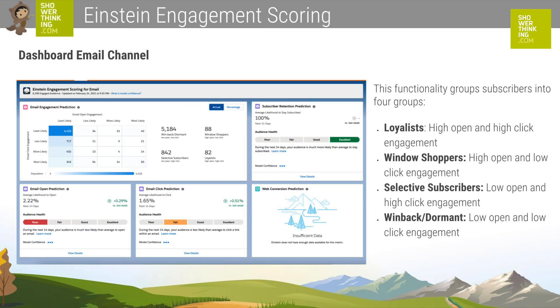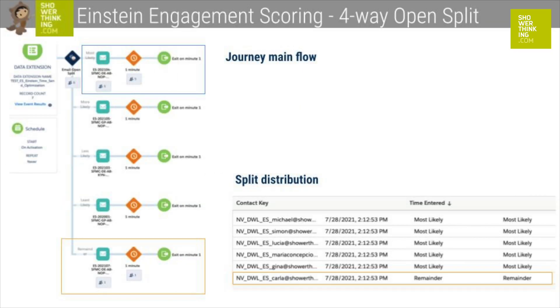Einstein categorizes our subscribers into the following groups: Loyalists — high open and high click engagement; Window Shoppers — high open rates and low click engagement; Selective Subscribers — low open and high click engagement; and Winback or Dormant — low open and low click engagement. This way we can create different branches in Journey Builder through a drag-and-drop system and consequently further customize the customer experience. In the email channel we can also choose to create different communication flows based on the propensity to certain actions, like how likely to open the email, to click, to convert on the web, or even to remain subscribed.